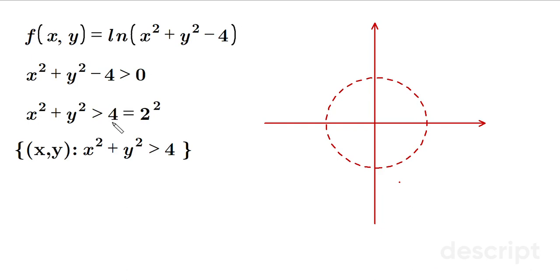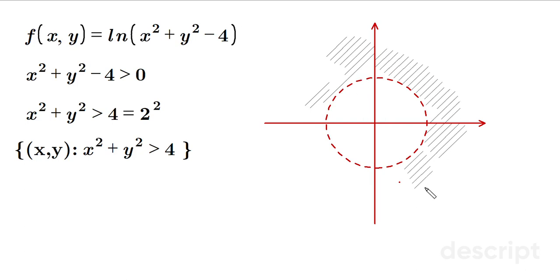It has to be greater than 4. So basically, that refers to points outside the circle, like this. Look, see I'm shading outside the circle to indicate that.